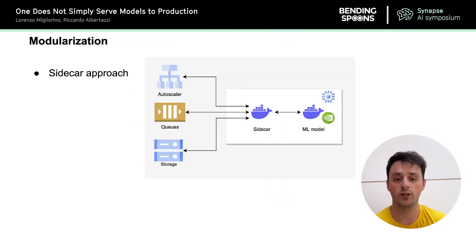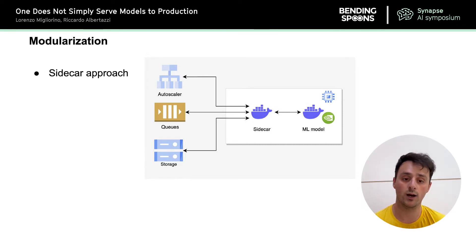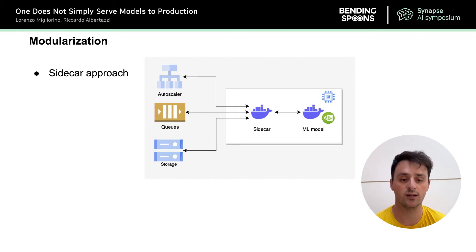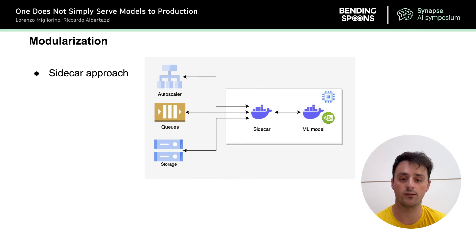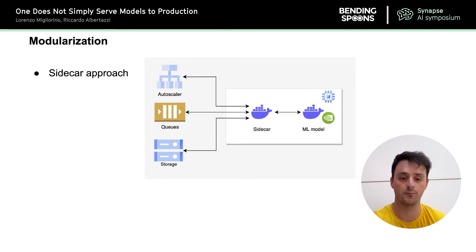First, modularization. We deploy our code into Docker containers — lightweight virtual machines that can be run in an isolated and reproducible environment. These containers run on Google Cloud Virtual Machines. To achieve modularization, we created two containers that run on the same VM and communicate with each other. The first one, on the right, is solely responsible for the machine learning part — it runs predictions and uses GPUs to process requests. This container is developed by AI researchers and engineers and just needs to take an input and return an output without knowing anything about the infrastructure. The second is a sidecar component responsible for all infrastructure-related tasks such as communicating with input and output queues, downloading and uploading data to external blob storage, and driving the autoscaler. This component is developed by backend engineers and doesn't need to know anything about the internals of the machine learning model.